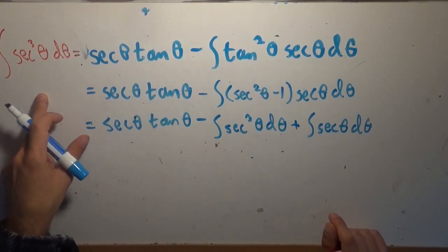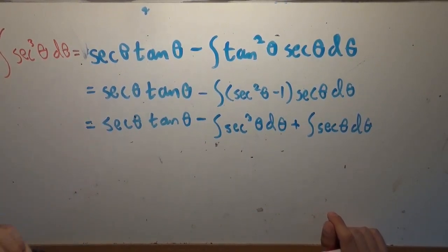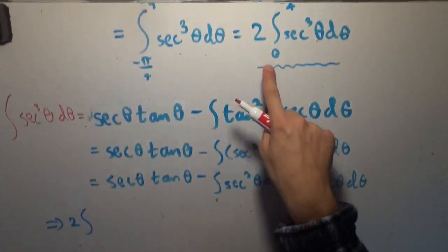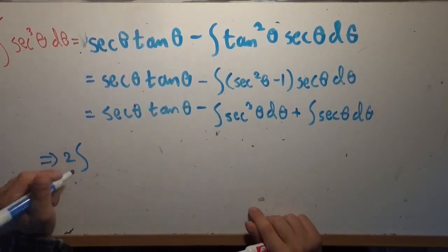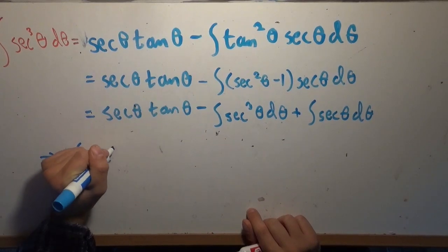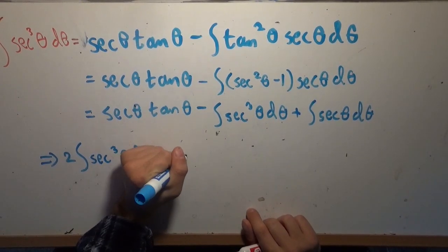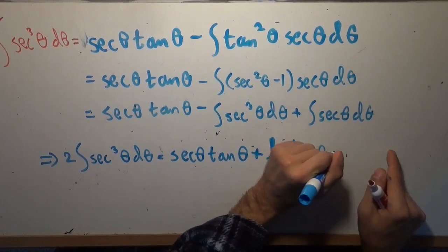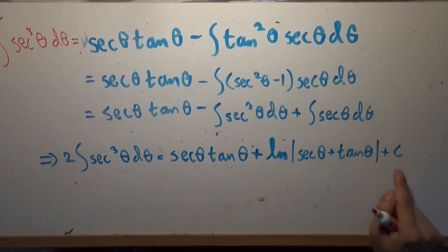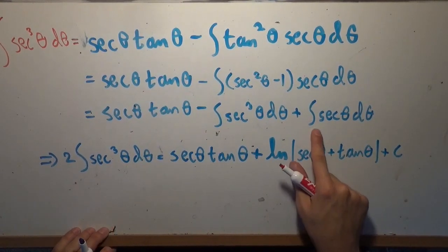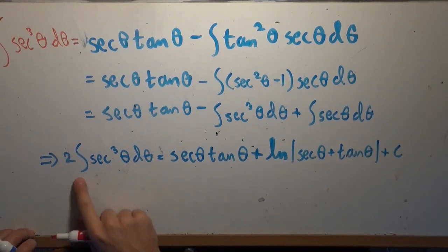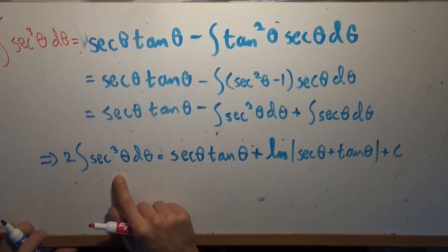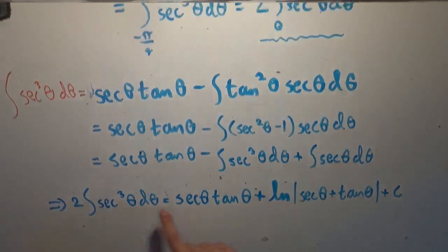Adding the secant cubed over gives us two on this side of the equation, and dividing by two, we end up with: two times the integral of secant cubed theta d theta equals secant theta tangent theta, plus the natural logarithm of the absolute value of secant theta plus tangent theta, plus a constant C. This is a standard result — we added the secant cubed over, so they didn't cancel, and we've got exactly two times the integral of secant cubed, which is what we want.